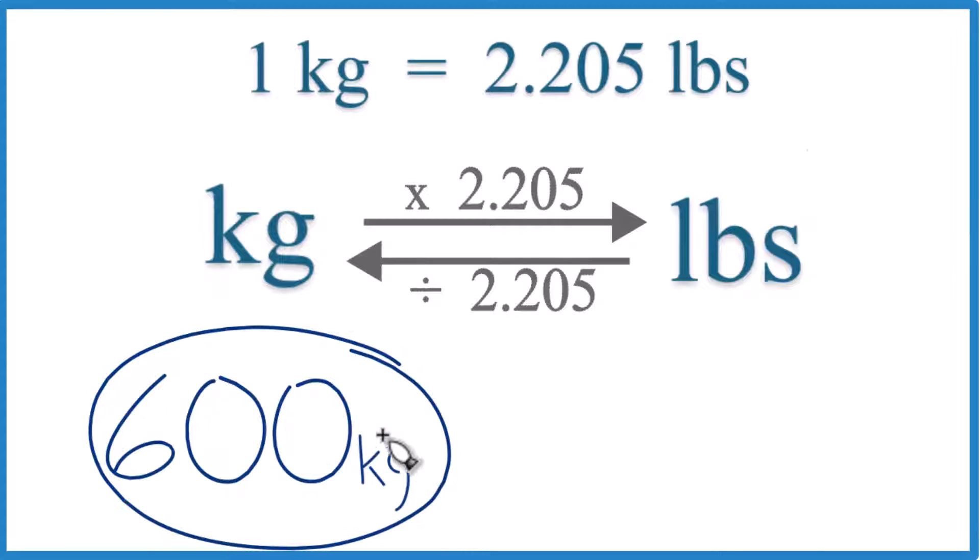So if you have 600 kilograms and you want to get that to pounds, here's how you do it. One kilogram is 2.205 pounds.